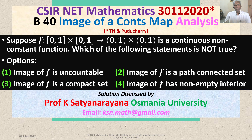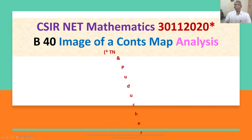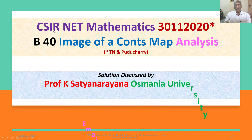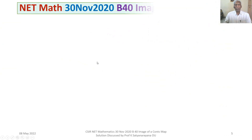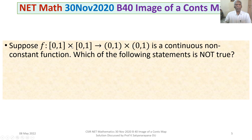We now discuss the solution of a problem from real analysis. The problem is on the image of a continuous map, and it appeared in the CSIR National Eligibility Test held on 30th November 2020, from Section B. The problem is: suppose f is a function from the closed and bounded interval [0,1] × [0,1] into the open interval (0,1) × (0,1), and f is a continuous non-constant function. Then which of the following statements is not true?